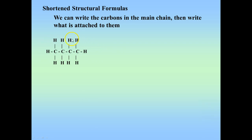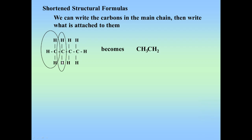Here's a simple example. Start at one end: carbon number one has three hydrogens, so write CH3. The next carbon has two hydrogens — write CH2. The third carbon has two hydrogens — CH2. The last carbon has three hydrogens — CH3. So it becomes CH3CH2CH2CH3. It's a whole lot easier to type than drawing out the full structural formula.